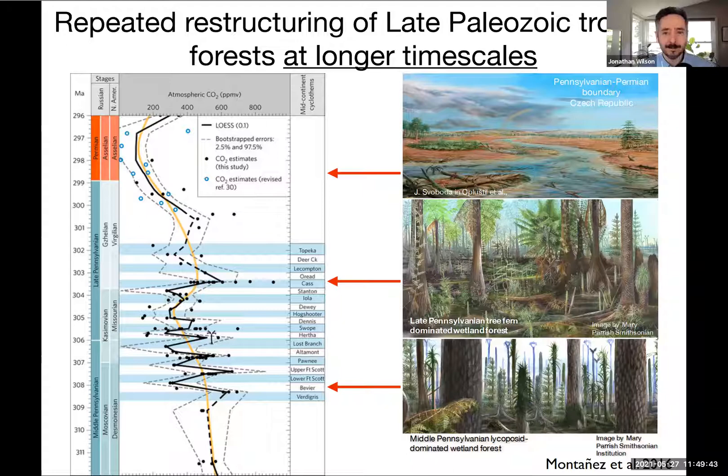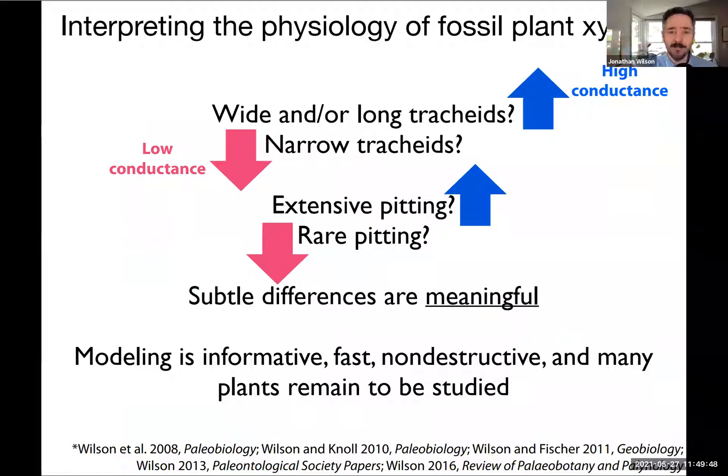Here are some heuristics for interpreting the physiology of xylem cells wherever you find them — in wood, leaves, or roots. Wide or long tracheids indicate high hydraulic conductance; narrow tracheids indicate low conductance. Small differences in size matter — remember R to the fourth power. As the sphenophytes showed, there's likely to be a great deal of functional diversity that may be masked by morphological similarity of many Carboniferous plants. If you have permineralized xylem and would like to know more about it, please let me know.